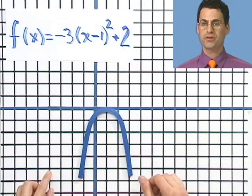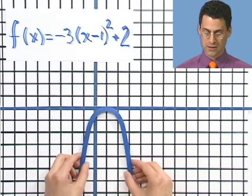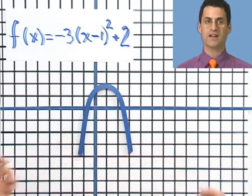And then what does the plus 2 do? That's an increase in y, so I go high. 1, 2. And there is the graph.